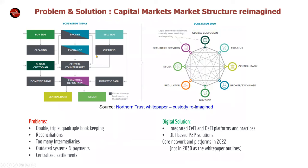Northern Trust highlights in simplified form what happens today in the ecosystem between various parties, and what they envision in a decentralized blockchain world — what they call the ecosystem in 2030. That's still a few years away, but what we have today is that a lot of these solutions are already in place or almost ready to be integrated. You can look at DTCC solutions for private equity, exchanges from ASX to Deutsche Börse — early versions of a blockchain-based capital markets network are forming.